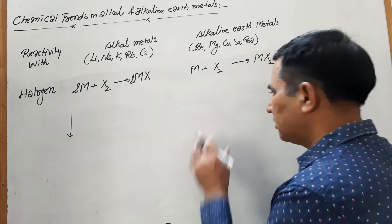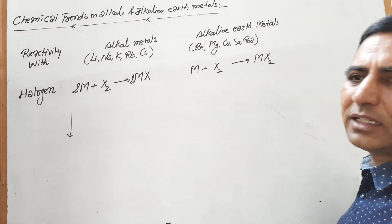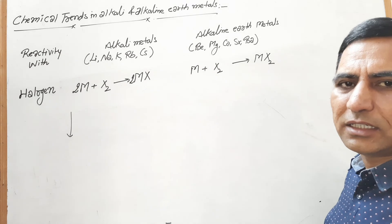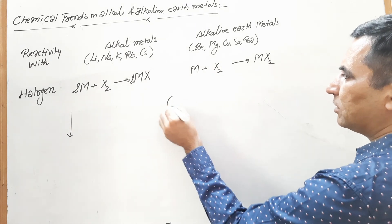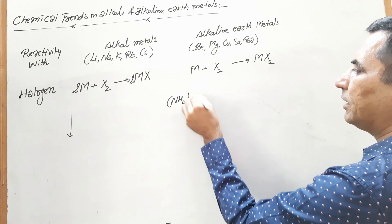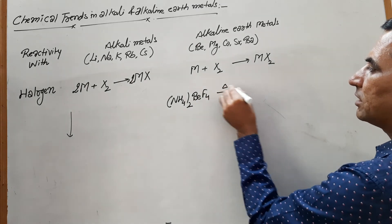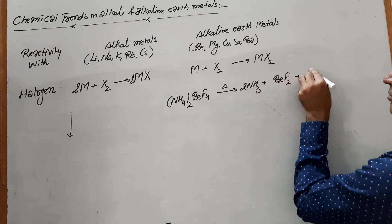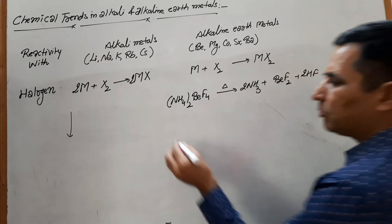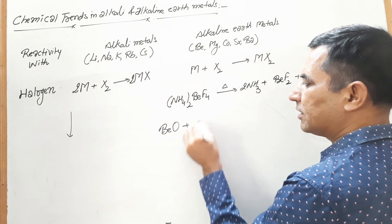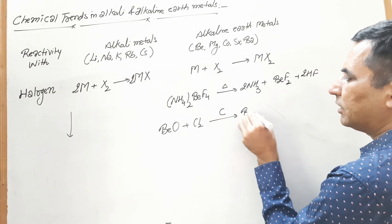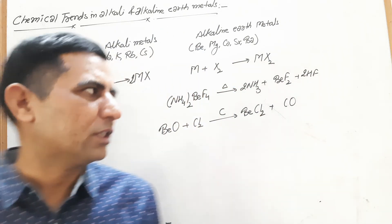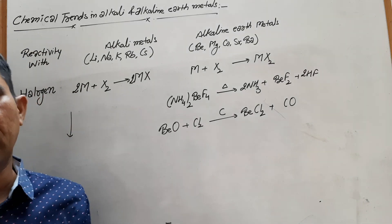The preparation of beryllium fluoride and beryllium chloride is quite difficult because beryllium does not react readily with chlorine and fluorine. The best way to prepare beryllium fluoride is by heating ammonium beryllium fluoride, which converts to beryllium fluoride. Beryllium chloride is prepared by reacting beryllium oxide with chlorine in the presence of carbon, forming beryllium chloride and carbon monoxide. These are the key points regarding the chemical reactivity of alkaline and alkaline earth metals.